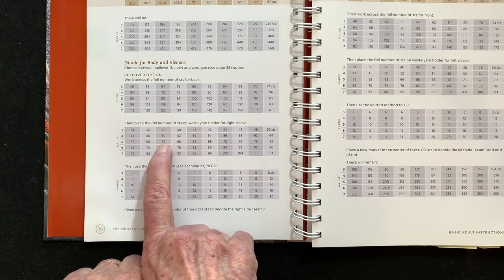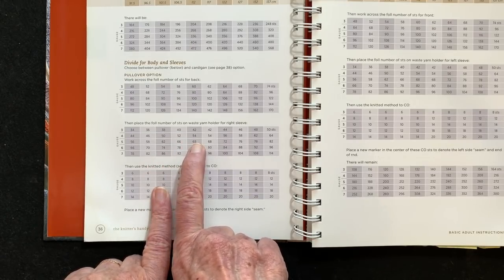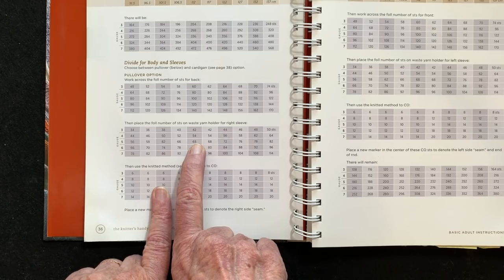So we see we have 62 stitches for size 40, 68 for size 44. That is six stitches different per sleeve. We have two sleeves so that's 12 stitches more.